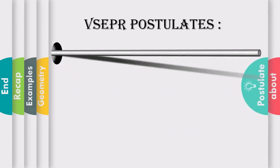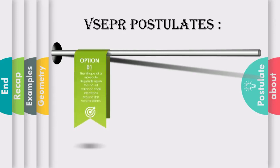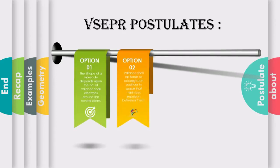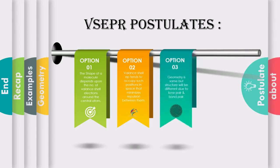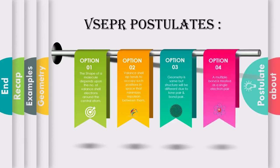Let's look at the postulates of VSEPR theory. Number one: the shape of a molecule depends upon the number of valence shell electrons around the central atom. Number two: the valence shell electron pairs tend to occupy such positions in space that minimizes the repulsion between them. Number three: the geometry of two molecules can be the same but their structure will be different due to the presence of lone pairs and bond pairs. Number four: a multiple bond is treated as a single electron pair.